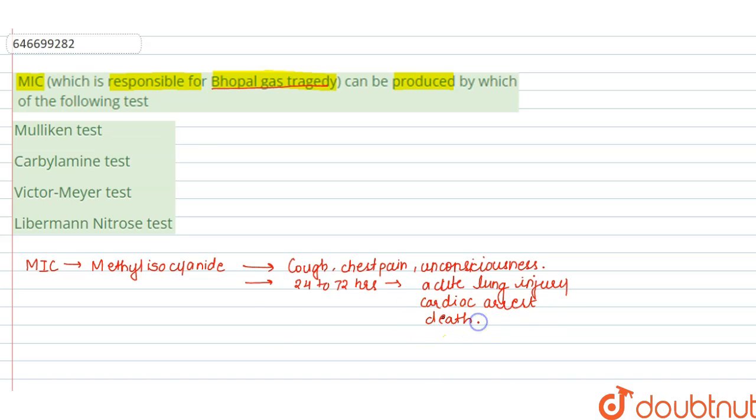Now we have to find out by which test we can prepare methyl isocyanide. So Mullican test - it is used to detect the presence of nitro group, NO2 group.